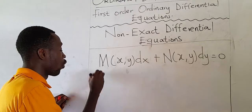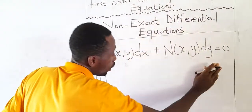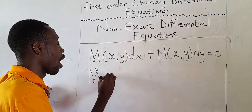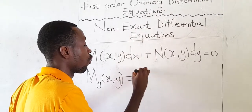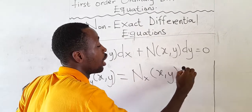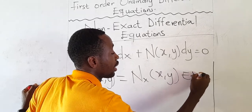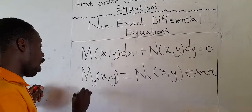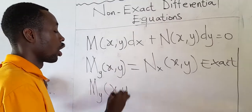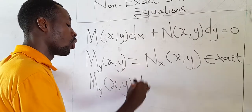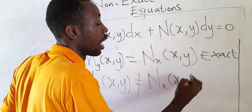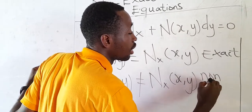We learned that if an equation is in this form and we find the partial differentiation of M with respect to Y and it is equal to the partial differentiation of N with respect to X, we call that equation exact. And when the partial differentiation of M with respect to Y is not equal to the partial differentiation of N with respect to X, we call that equation non-exact.